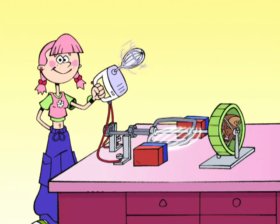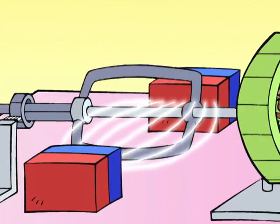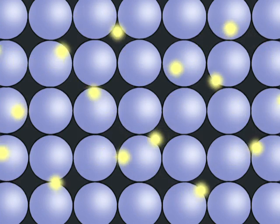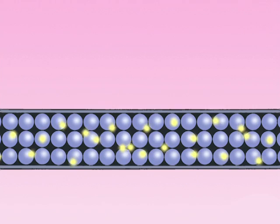To generate electricity, we turn a loop of metal wire between two magnets. The metal wire contains free electrons. These are electrical particles that move around freely.